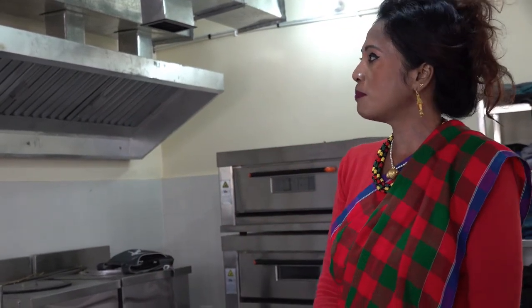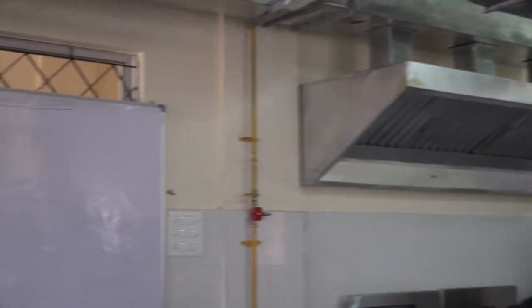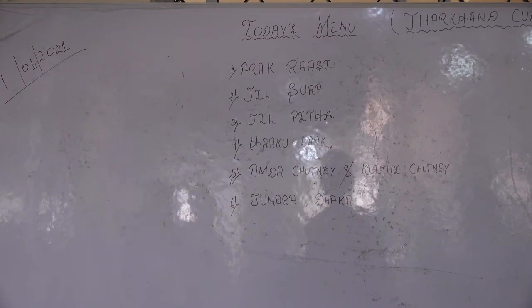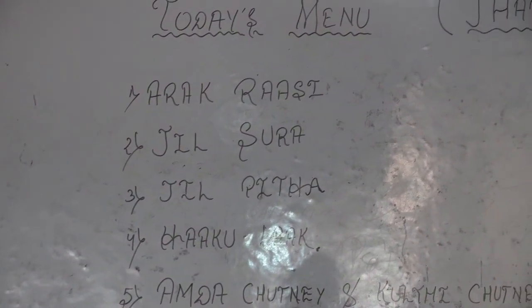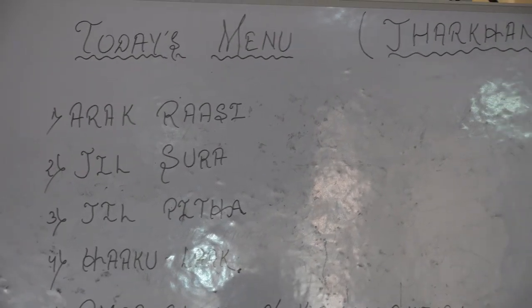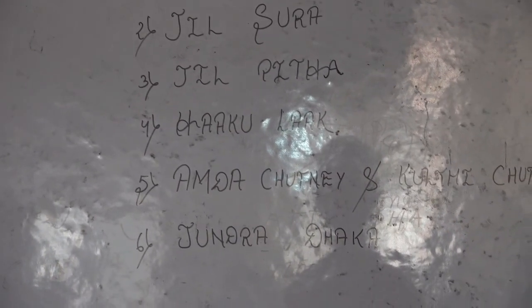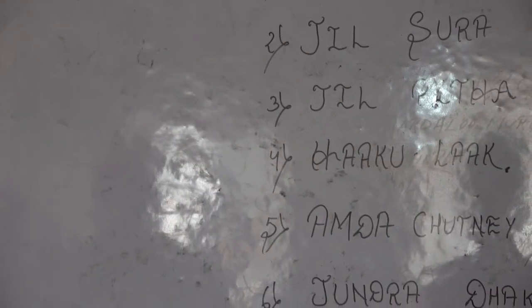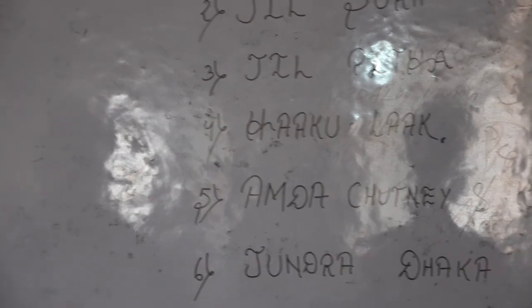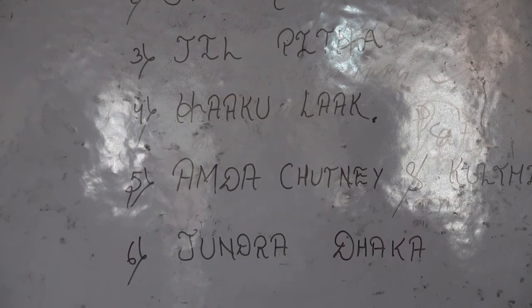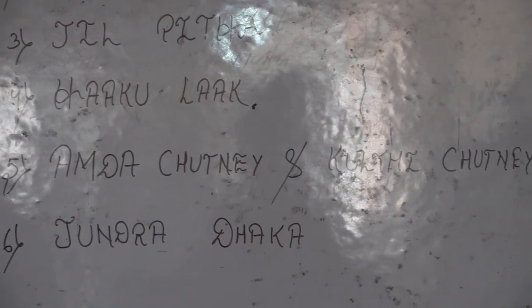So here I am today for the indigenous cuisine. Come with us and we will introduce today's menu. The first one is ara rasi — that is the appetizer, the soup. Then we have jil suda, which is a kind of rice preparation. Then we have jilbitha, which is a bread preparation. Then hakula, which is a fish mashed preparation.